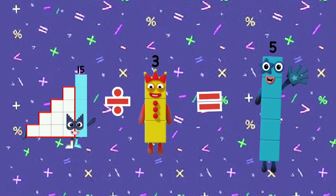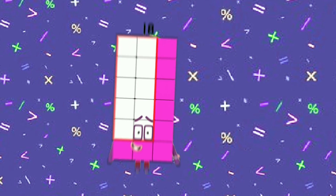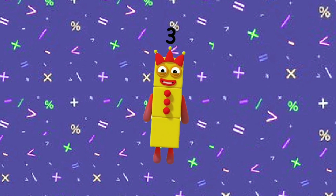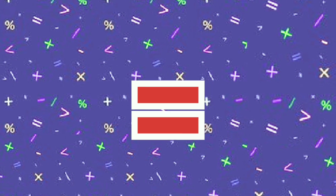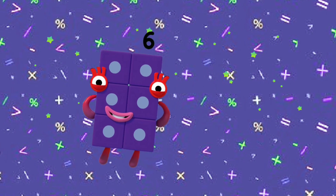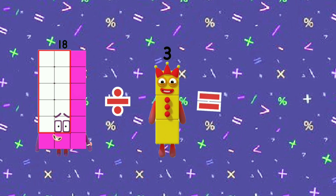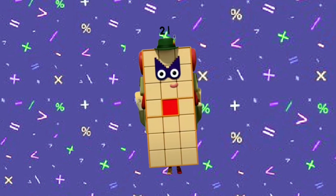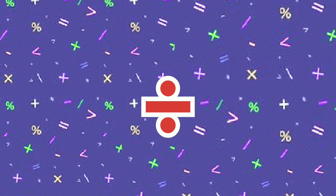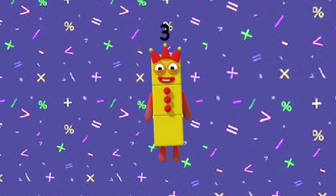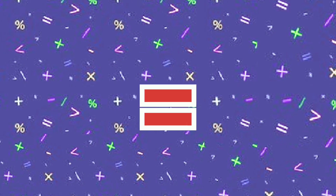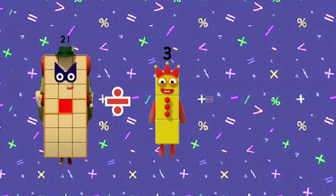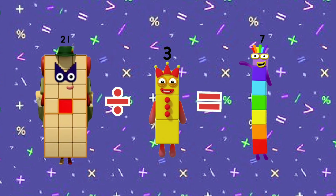Fifteen divided by three equals five. Eighteen divided by three equals six. Twenty-one divided by three equals seven.